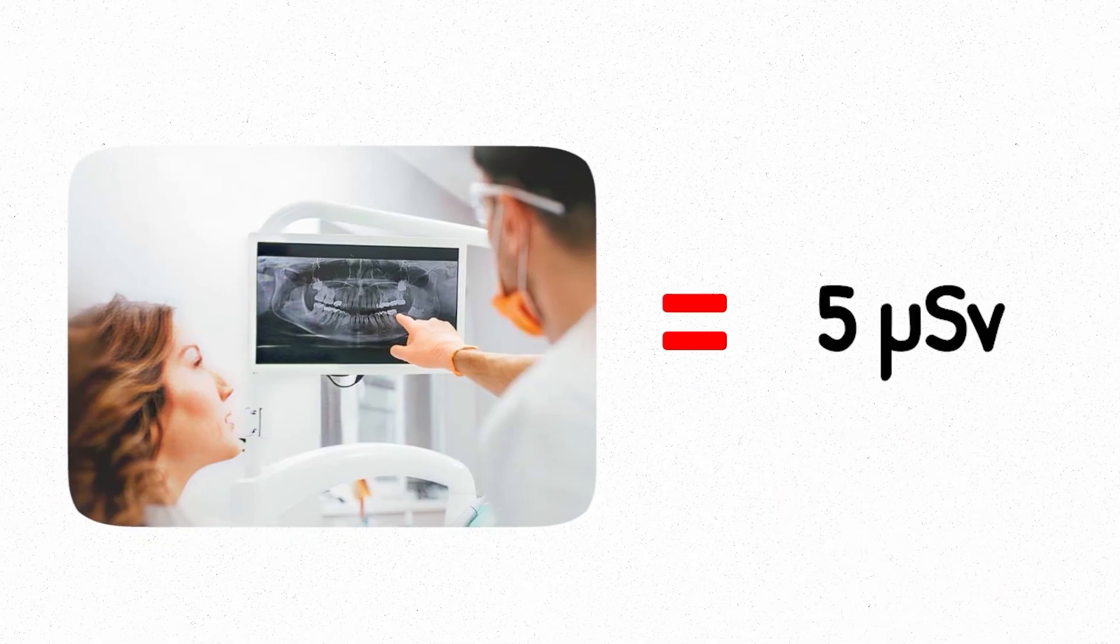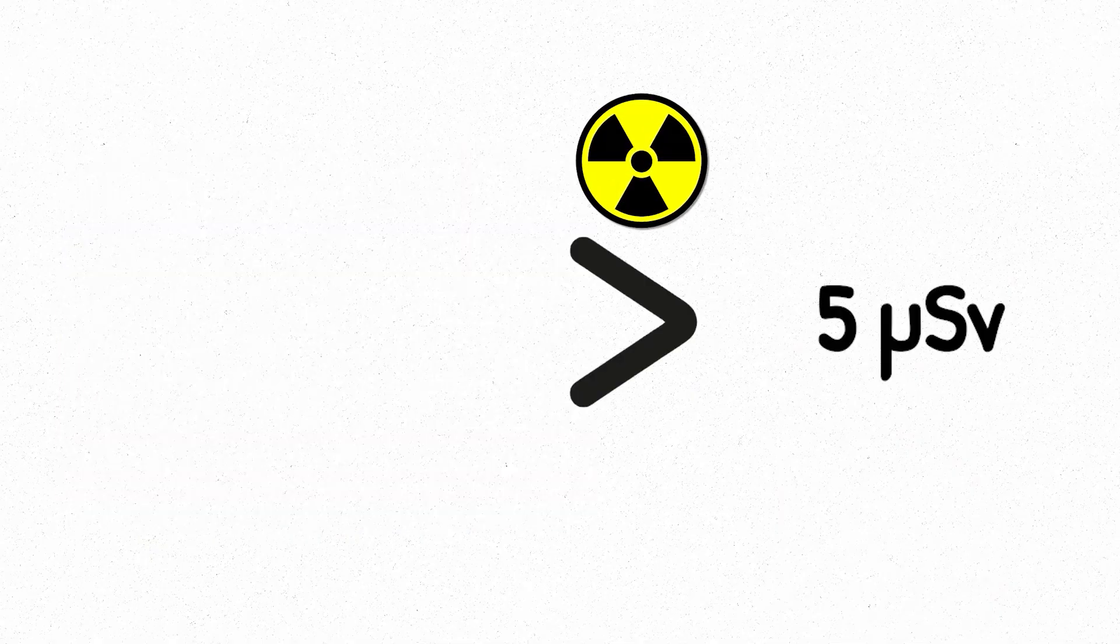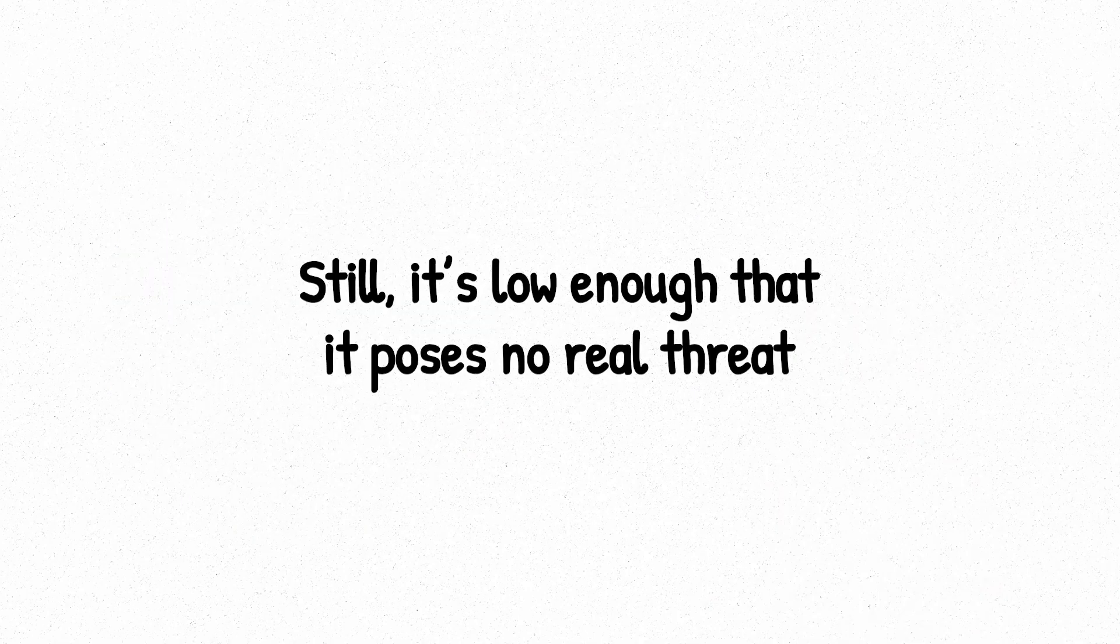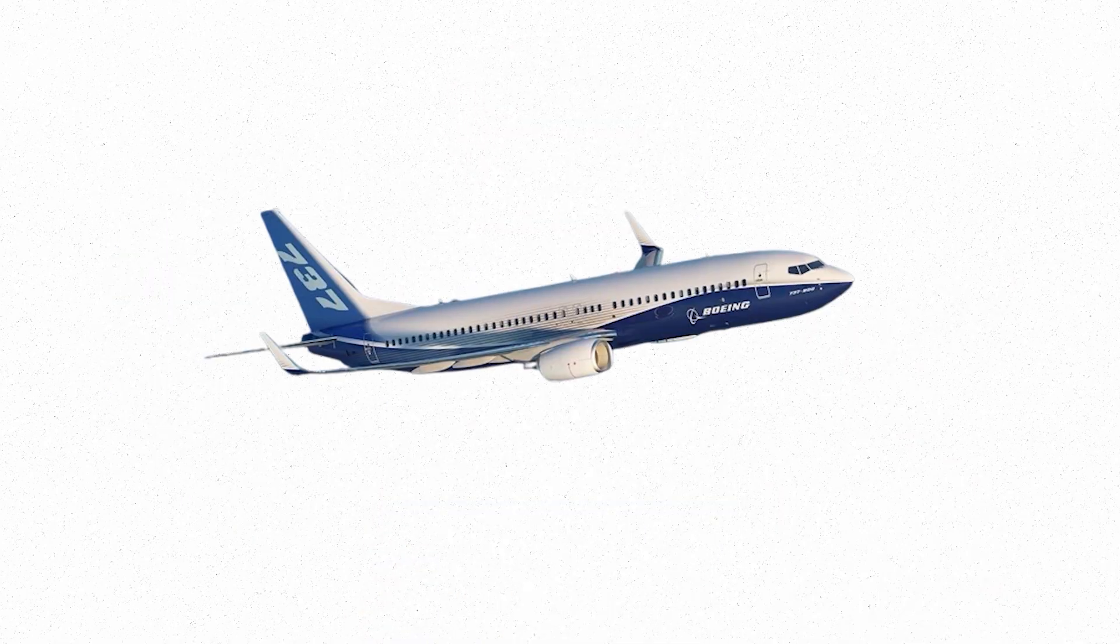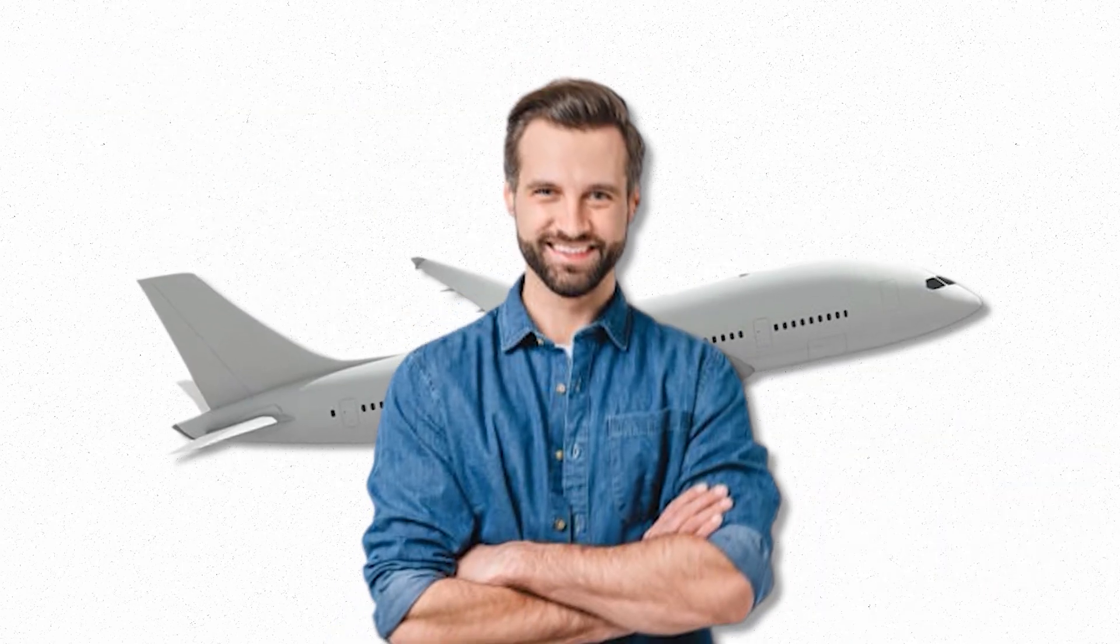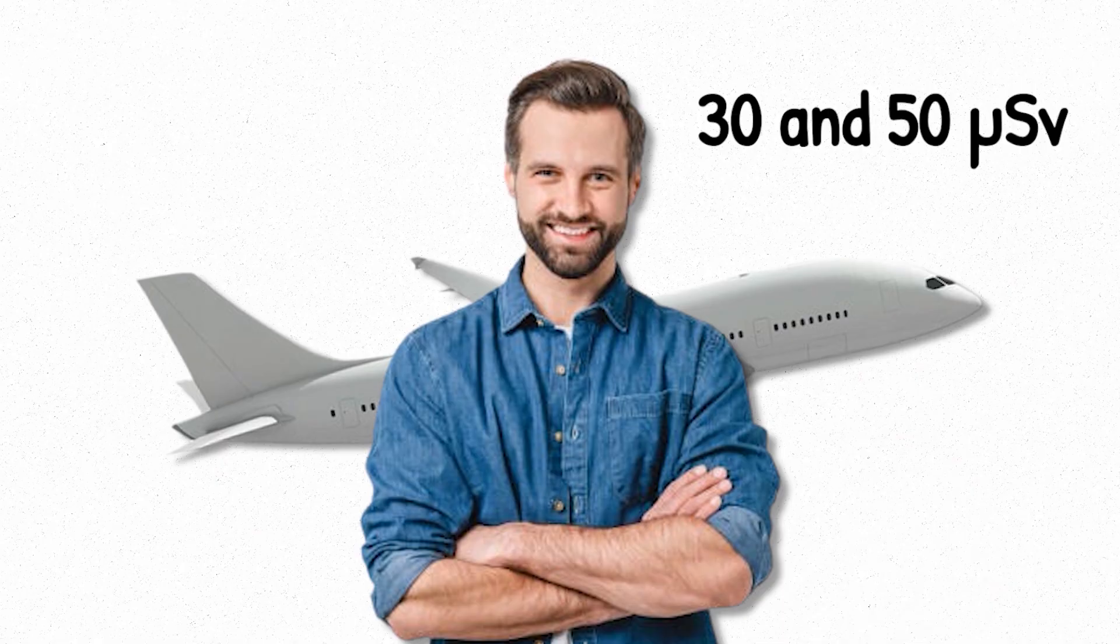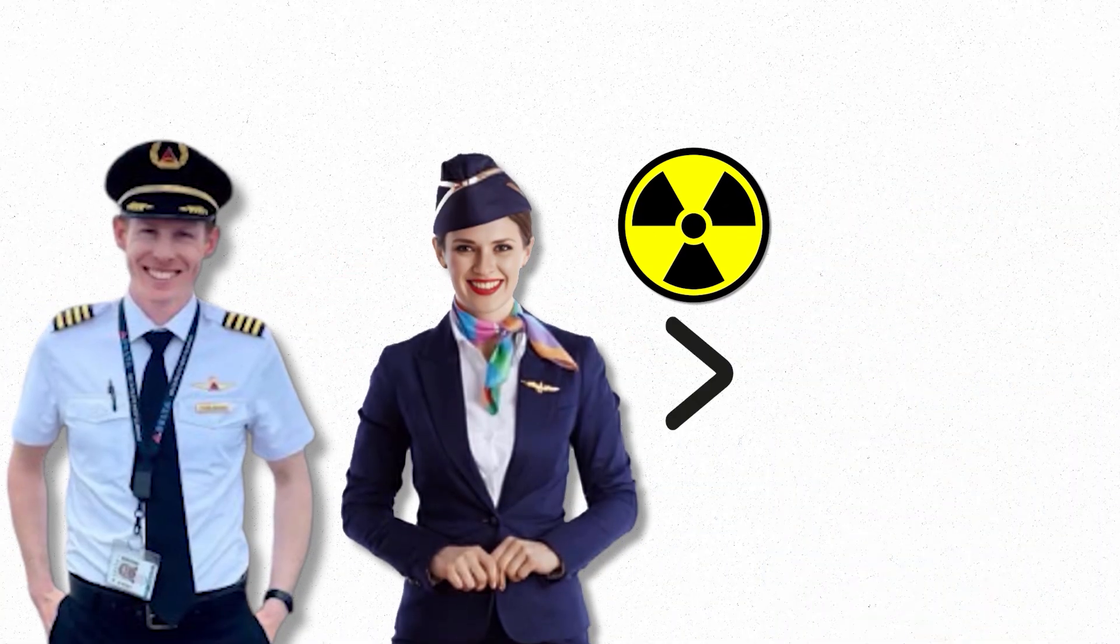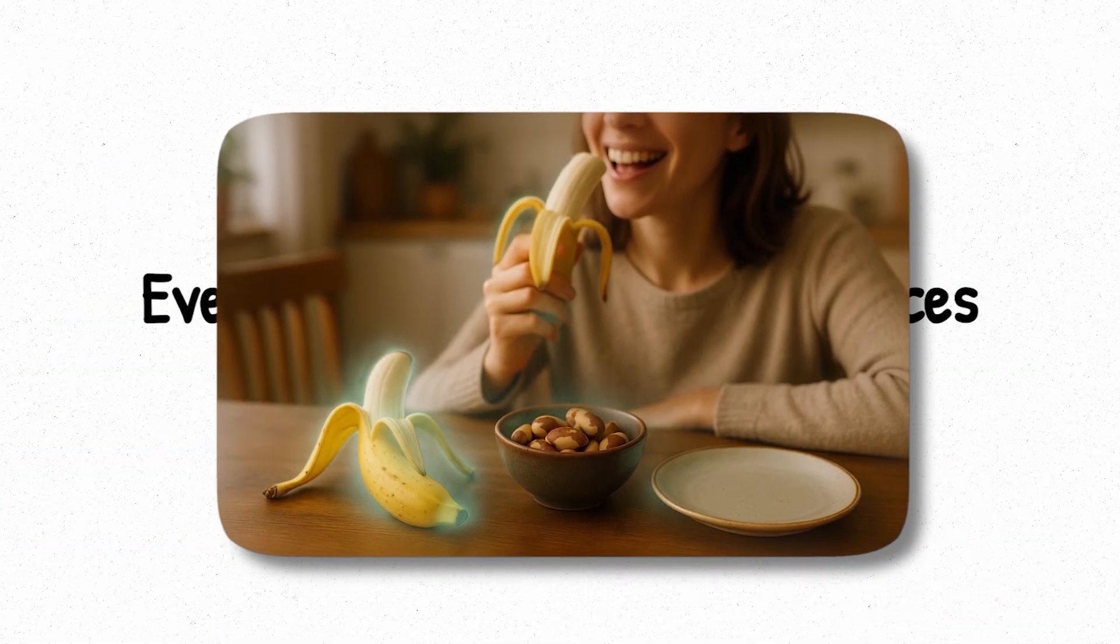Let's say you go to the dentist. A single dental x-ray gives you around 5 microsieverts. That's more radiation than you'd get from an entire day of just living on Earth. But it happens in under a second. Still, it's low enough that it poses no real threat. Now picture boarding a commercial airplane. During a typical cross-country flight, you'll absorb between 30 and 50 microsieverts just from cosmic rays at high altitude. The higher you go, the less atmospheric shielding you have, and the more radiation reaches your body.